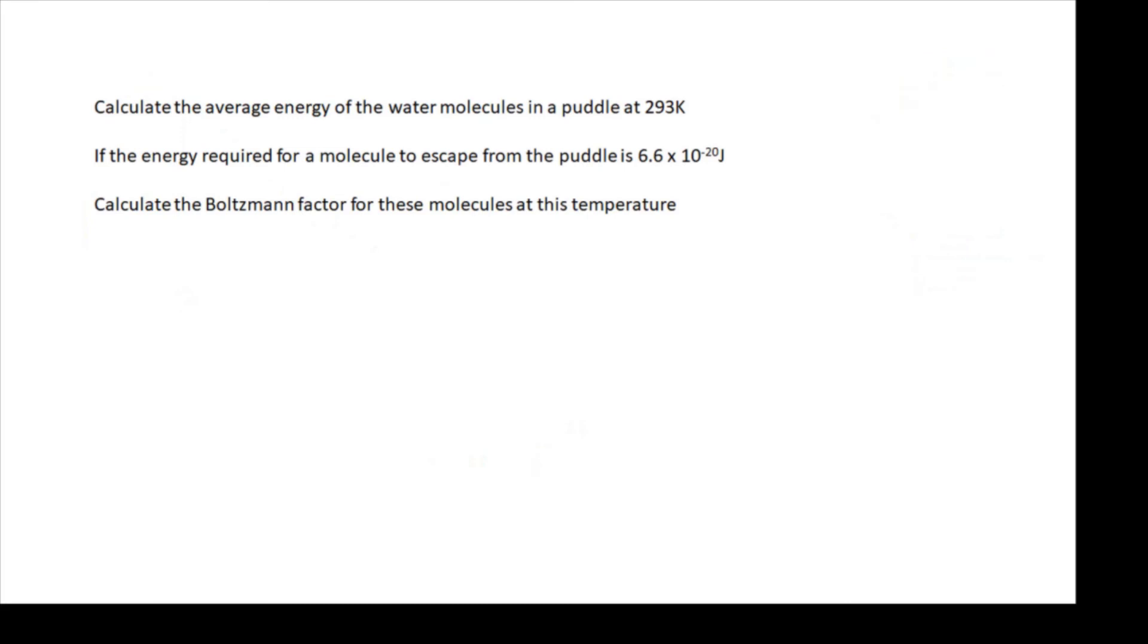Here's a straightforward example. We'll look at a trickier one later. Calculate the average energy of the water molecules in the puddle at 293 Kelvin, which is obviously about 20 degrees centigrade. If the energy required for a molecule to escape from the puddle is that, calculate the Boltzmann Factor for these molecules at this temperature. I'll give you a chance to stop the video and have a go at that yourself.